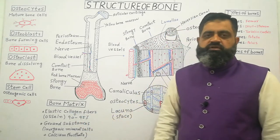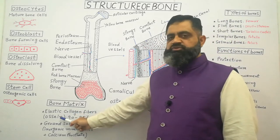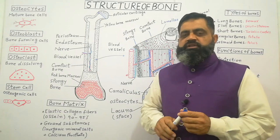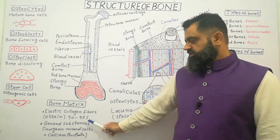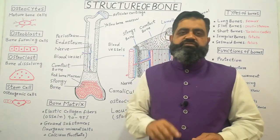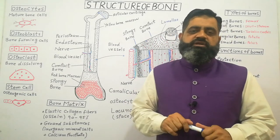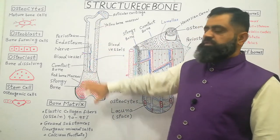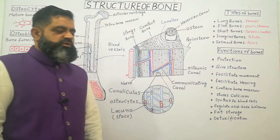Bone matrix is the framework of a bone, containing 90 to 95 percent collagen fiber protein, known as ossein. When the matrix is formed, the remaining 5 to 10 percent is known as ground substance, which is composed of inorganic mineral salts, calcium phosphates, and other ions like sodium, magnesium, and potassium, which are deposited inside the bone matrix to form the bone.